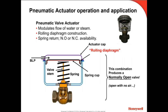The combination actuator and valve displayed here depicts a normally open configuration. That is, as branch-line air pressure is reduced, the spring pushes the stem up, lifting the stem and disc, and the valve moves towards open. If for any reason the air pressure is lost, the valve would go full open.